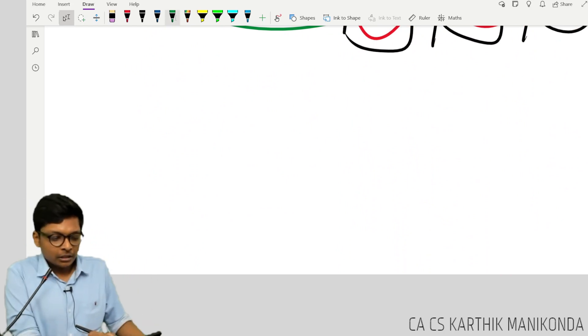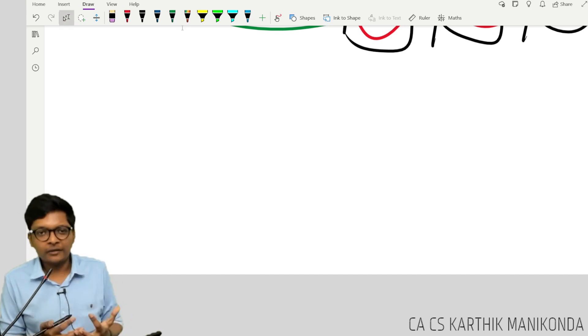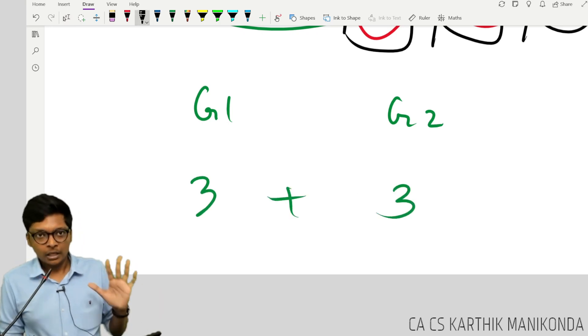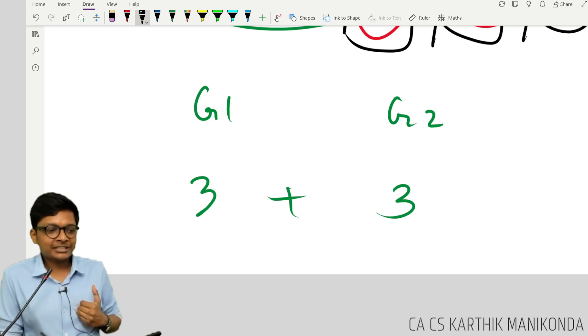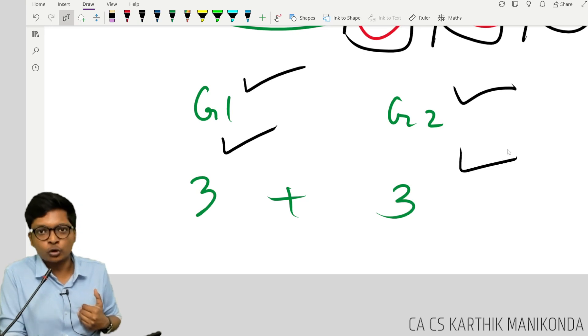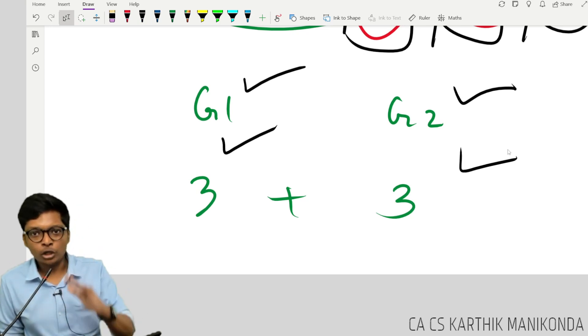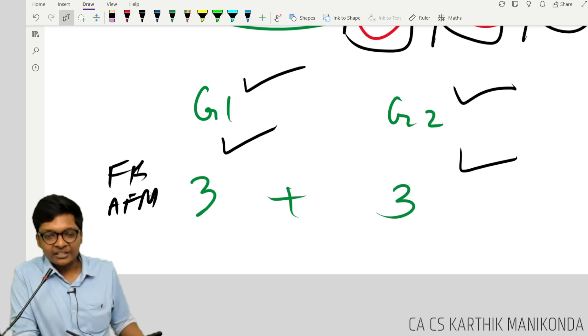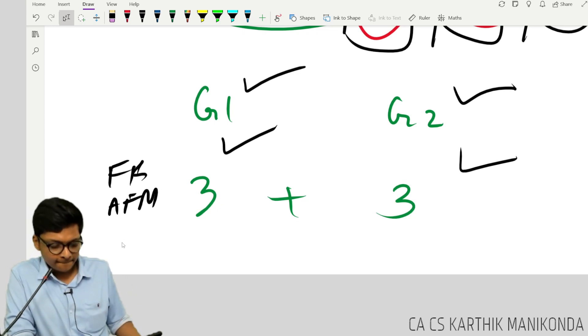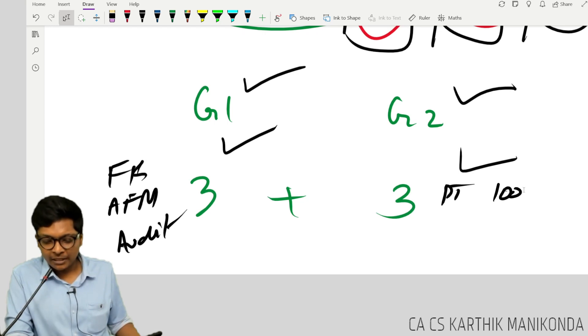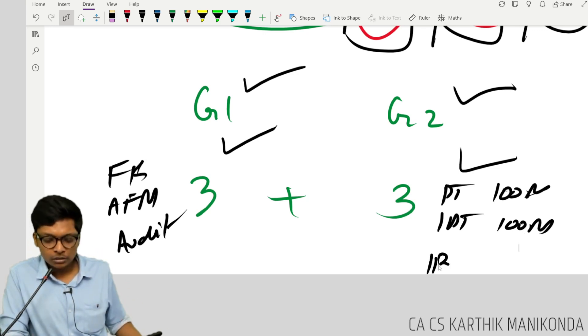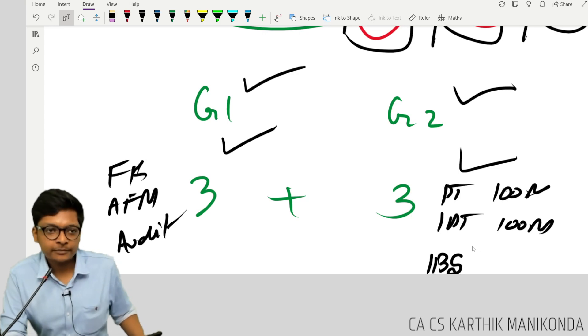Since we discussed about CA final, just one note, not relevant for your exams now. But remember guys, this time CA final has 3 plus 3, out of the box discussion. Unlike CA inter where some students can write group 2 first and group 1 next or group 1 first and group 2 next, CA final you cannot do that anymore. Why? What are the papers in CA final? FR financial reporting, AFM advanced financial management, basically your strategic financial management, and third one is audit. Group 2 direct tax is 100 marks, indirect tax is 100 marks, and they have introduced a new open book exam called integrated business case study.